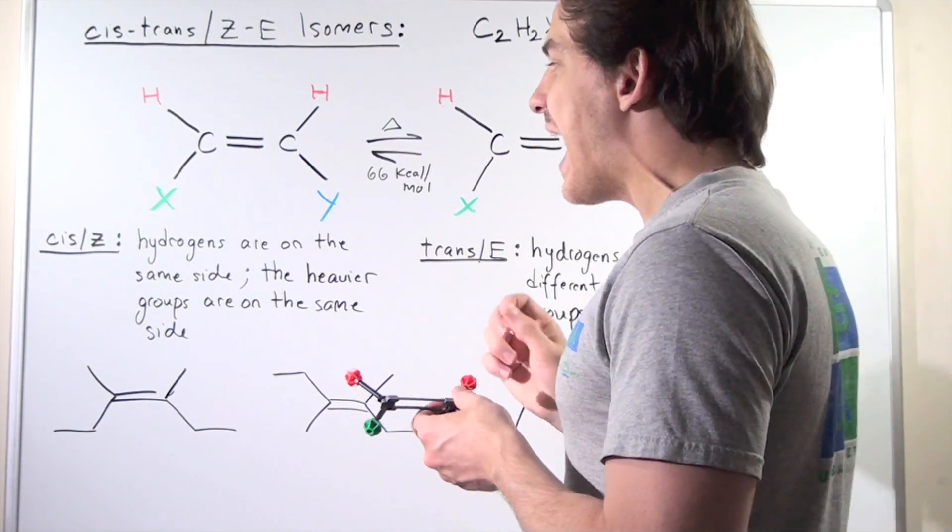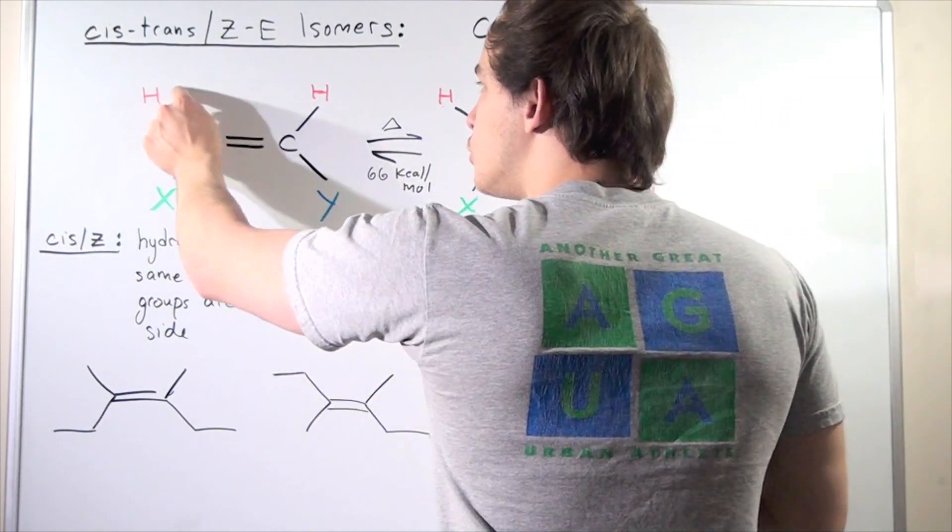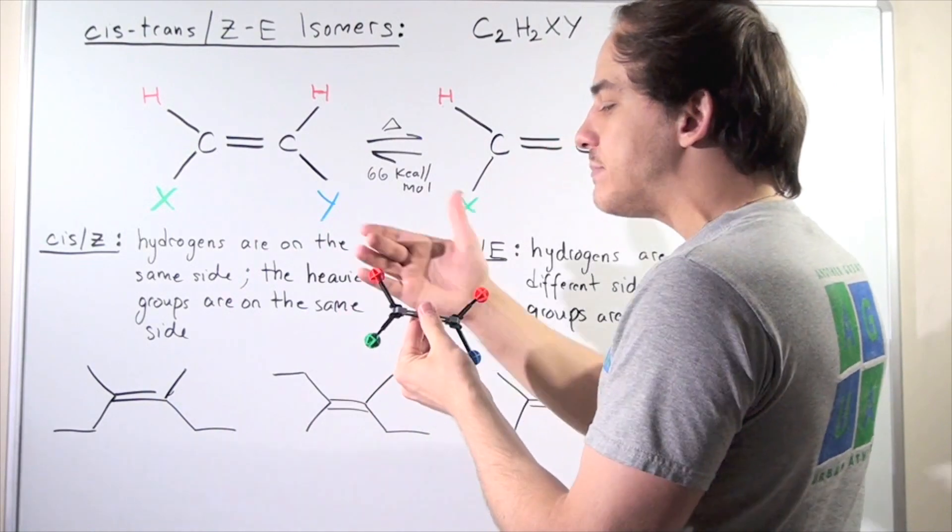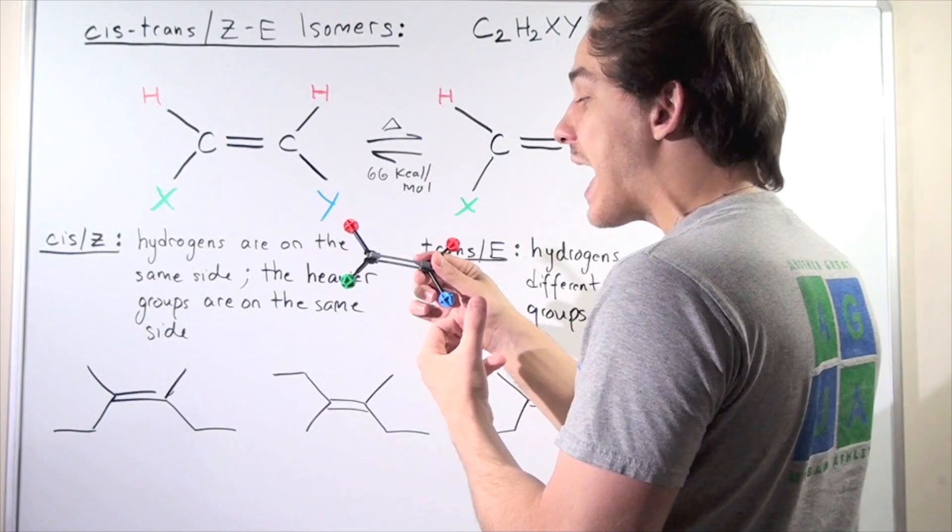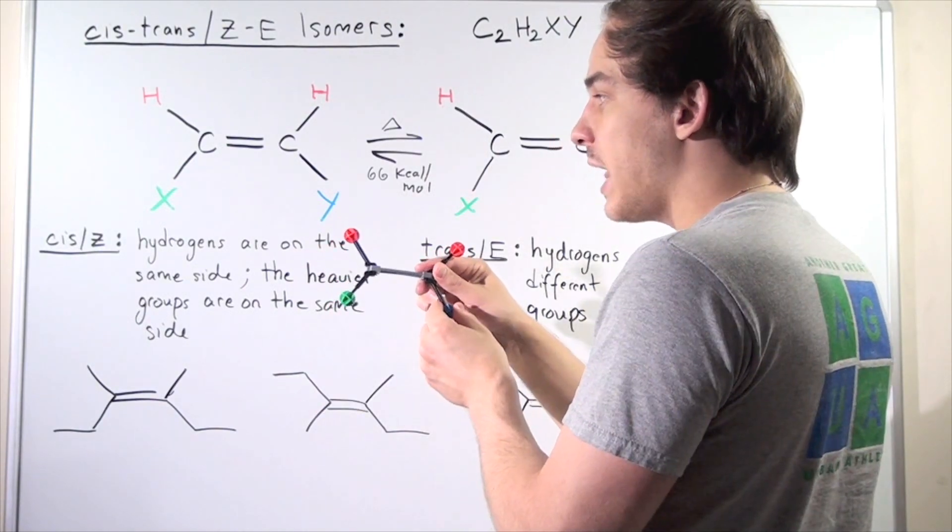Now, whenever we have the two H's on the same side of the plane, or the X and Y, the heavier atoms, on the same side of the plane, we have cis or Z compounds or molecules.